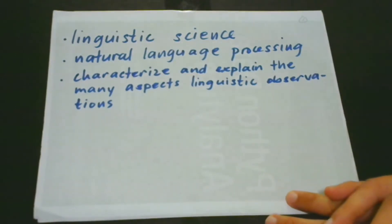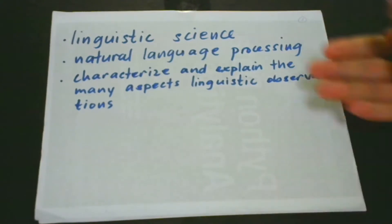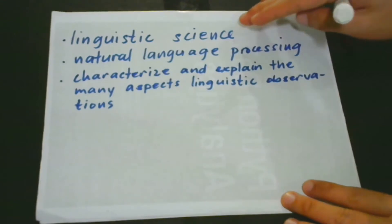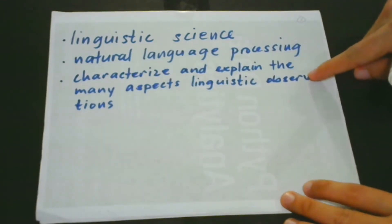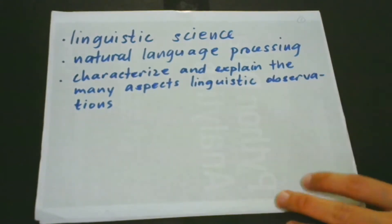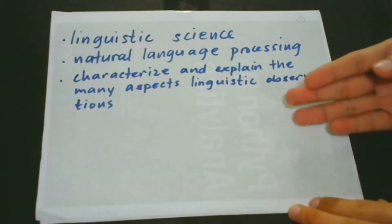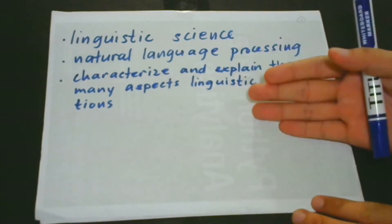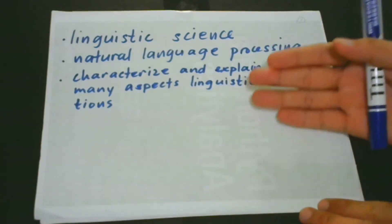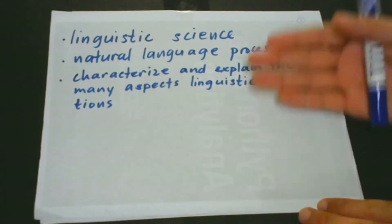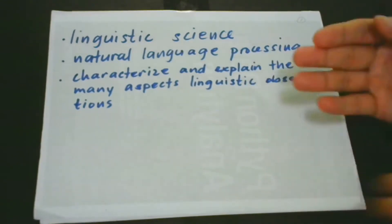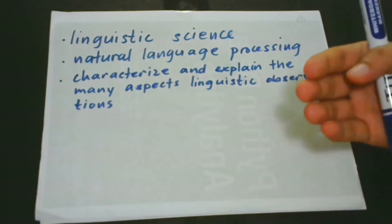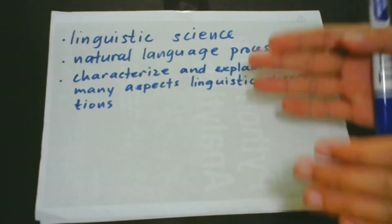What is the goal of linguistic science? Linguistic science aims to characterize and explain the many aspects of linguistic observations happening around us. These observations can be found in conversations, in formal and informal writings, and in other forms of communication that use natural language. As we go along with our course in natural language processing, we will understand, learn, and identify more of the different linguistic observations.